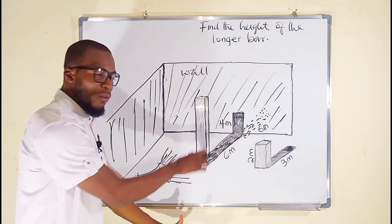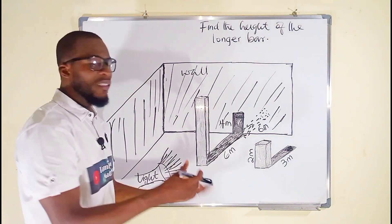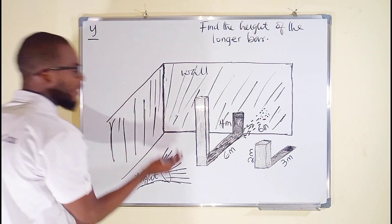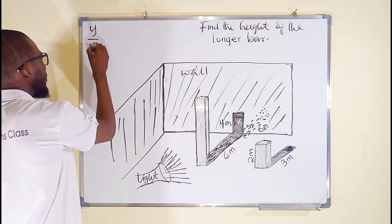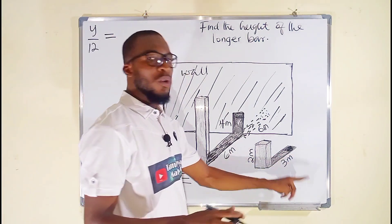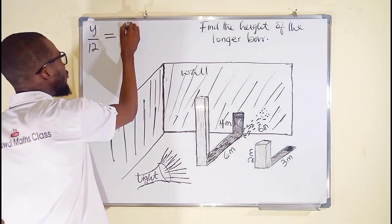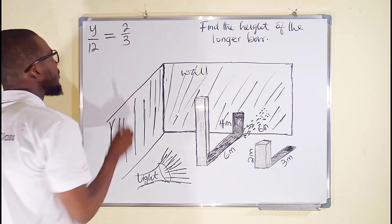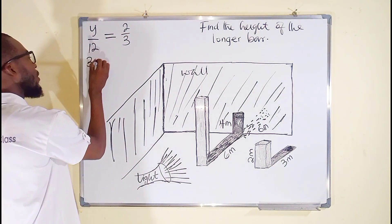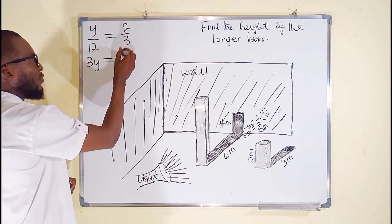So we don't know the length of this longer bar. We can let it be equal to y. So y divided by the length, which we have as 12, 6 plus 6 is 12, must be equal to 2 over 3 as well. We have 2 over 3. We cross multiply: y times 3 is 3y and 12 times 2 is 24.